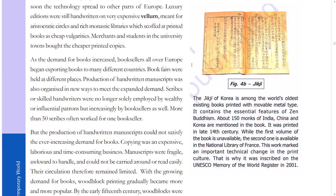The Jikji of Korea is among the world's oldest existing books printed with movable metal type. It contains the essential features of Zen Buddhism, and about 150 monks of India, China, and Korea are mentioned in this book. It was printed in the late 14th century. While the first volume is unavailable, the second is held in the National Library of France. This work marked an important technical change in print culture, and was inscribed on the UNESCO Memory of the World Register in 2001.